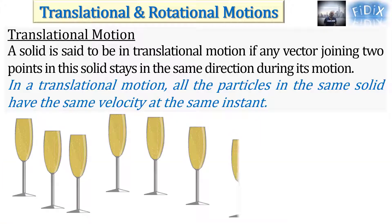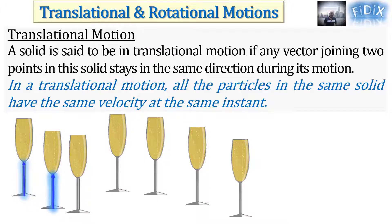This is another example of translational motion where a glass filled to the top is moved from a certain position to another without spilling any liquid. A blue vector is drawn in such a way as to overlap the stem of the glass. When the glass moves, the blue vector stays in the same direction during its motion.